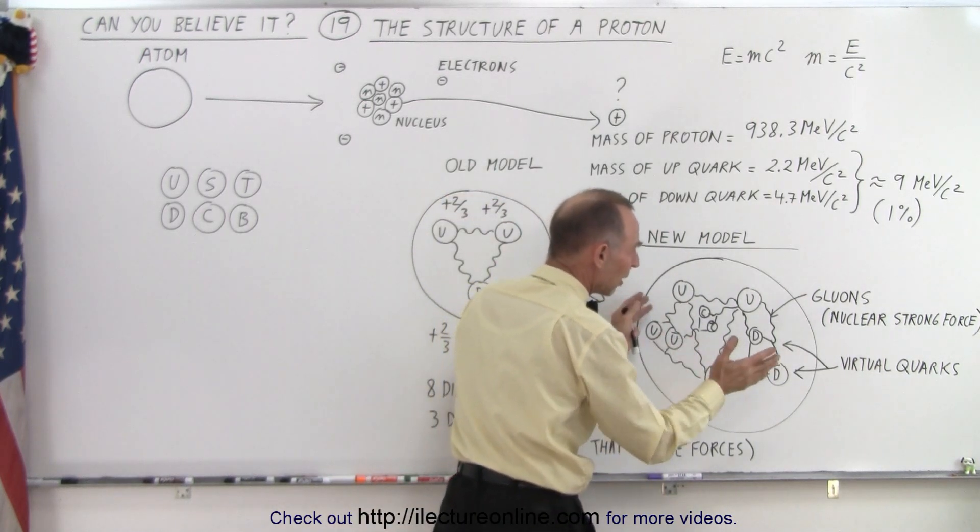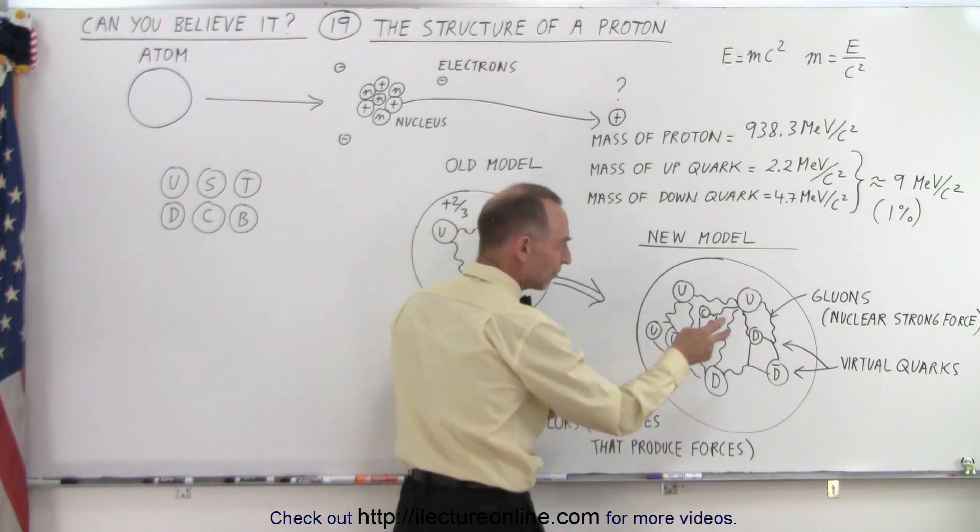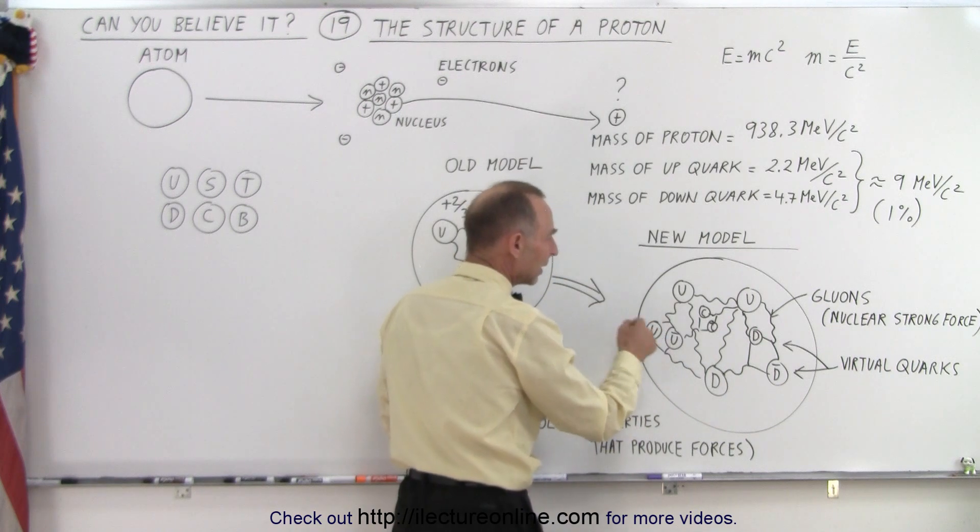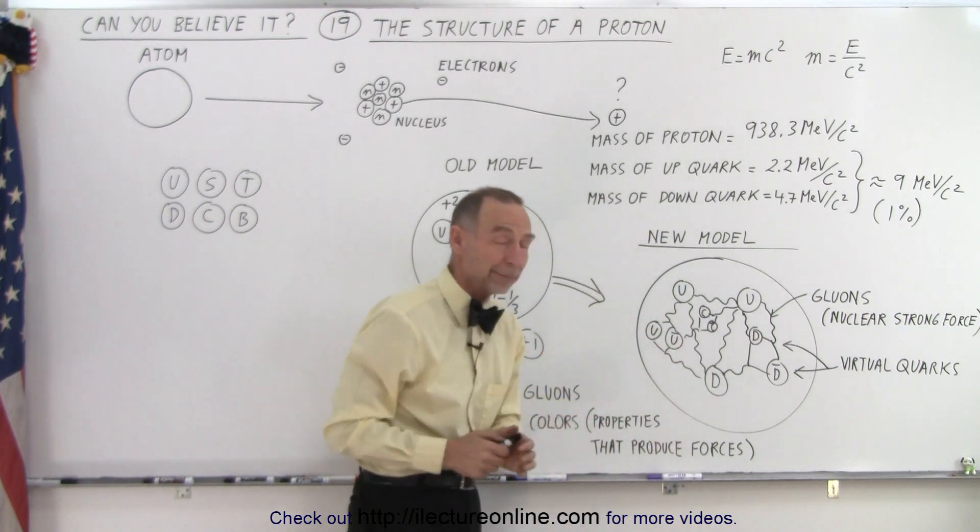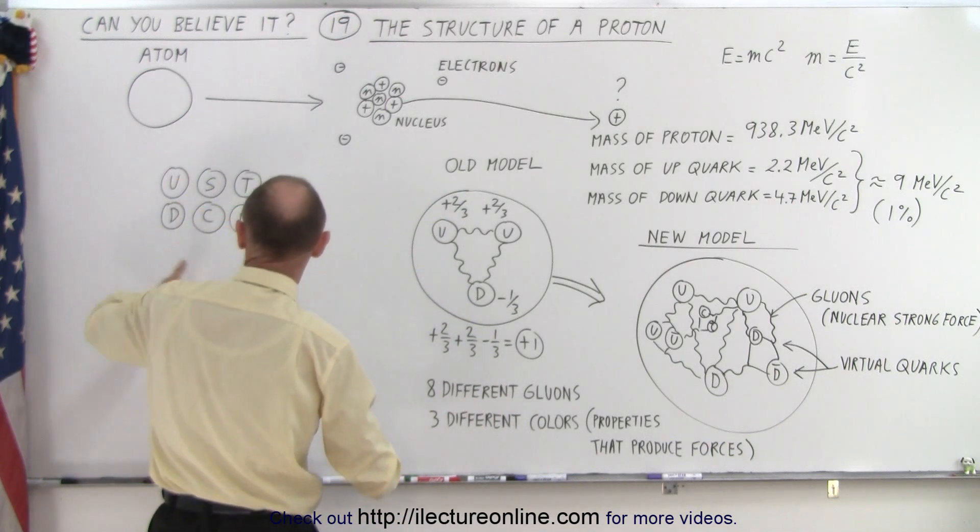And the gluons sometimes will split up in what we call virtual quarks. So we'll have a quark and an anti-quark, a down and an anti-down, an up and an anti-up, a charm and an anti-charm. Yes, there are quarks named charm, a charm, there's actually six different quarks,